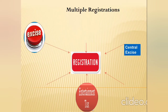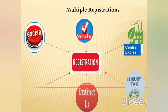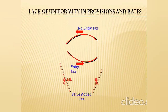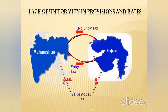Moving on — another reason India needs GST is multiple registrations. Businesses are required to register in multiple types of taxes: first for excise, then central excise, then service tax, then entertainment tax, then luxury tax, then VAT — that is Value Added Tax registration. Another reason is lack of uniformity in provisions and registration rates. As an example with VAT, goods from Maharashtra to Gujarat attract an entry tax of 4%, whereas goods from Gujarat to Maharashtra attract no entry tax.